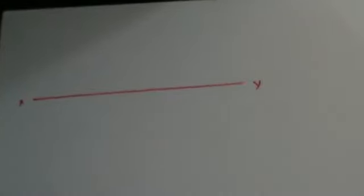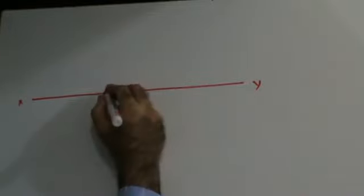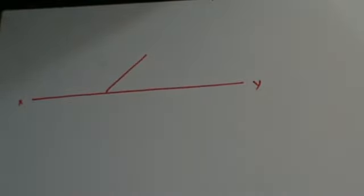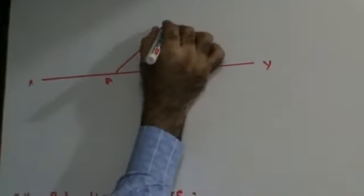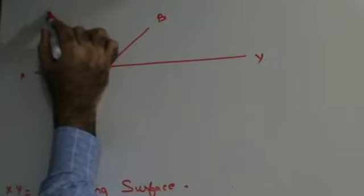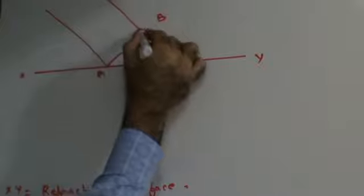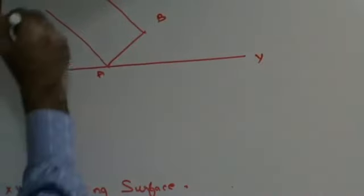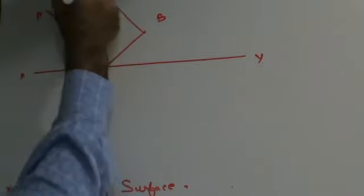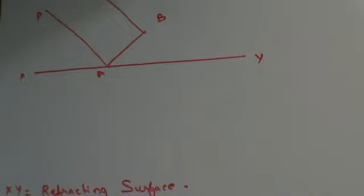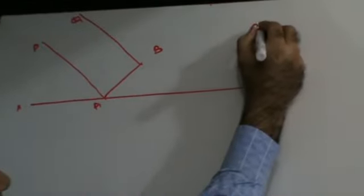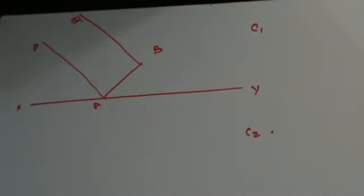Let's consider a refracting surface. Let's assume that XY is my refracting surface. Let's consider a plane wavefront AB. Rays of light will start from P and reach A, and from Q and will reach B. Let us assume that the velocity of light in medium 1 is C1 and velocity of light in medium 2 is C2.